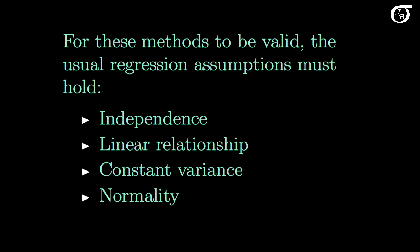For these methods to be valid, the usual regression assumptions must hold: independent observations, a linear relationship between y and x, the variance of y values being the same at every value of x, and y values being normally distributed about the line. In statistics, the normality assumption is often not critical with large sample sizes, as the central limit theorem applies. But prediction intervals for a single value are different — for the prediction interval methods to be reasonable, we need the y values to be approximately normally distributed. If they are not, the resulting prediction interval may be misleading.